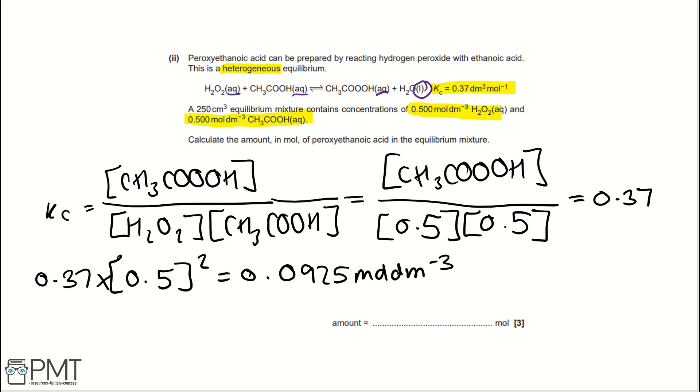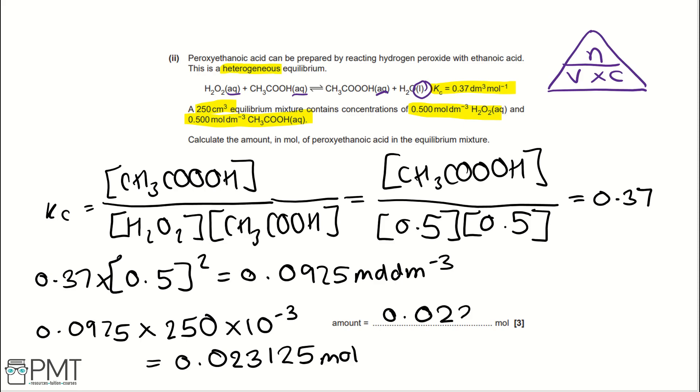If we're working out moles on its own, we would use our equation triangle, NVC. A way of remembering this is, Nigel's very clever. And if we were to apply this, we would take the concentration 0.0925, and multiply by our volume, which is 250 centimetres cubed. We want it in decimetres cubed, so we times by 10 to the negative 3, or divide by 1000. That gives us a value of 0.023125 moles. In our answer, we would write this to an appropriate number of significant figures, 0.023, for example.